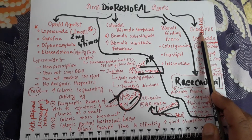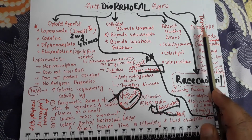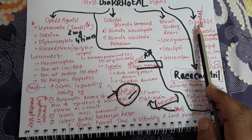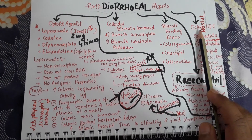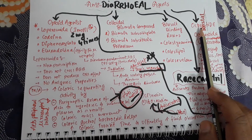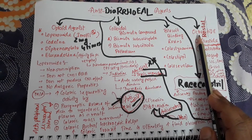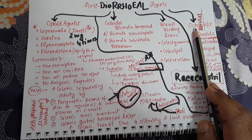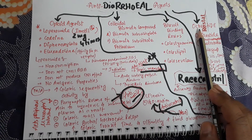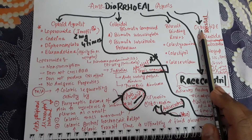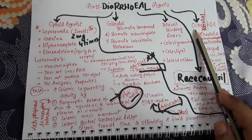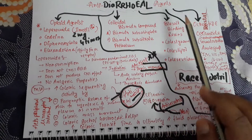The action of octreotide to prevent diarrhea is by inhibiting fluid secretion and inhibiting pancreatic secretion, producing an anti-secretory action. Octreotide has many adverse effects: it causes anorexia, nausea, flatulence, abdominal pain, and sometimes hypothyroidism because it inhibits anterior pituitary hormones, which in turn produces bradycardia, hypotension, and sinus bradycardia.